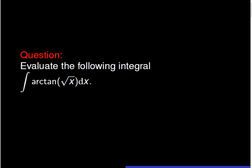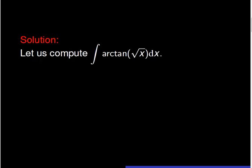In this problem, we are asked to find the antiderivative of the function arctangent of square root of x. When we look carefully at the function arctangent of square root of x, the first thing that comes to mind is that this function is a composition of two functions: the arctangent function and the square root function.